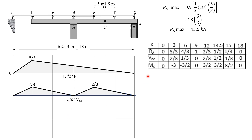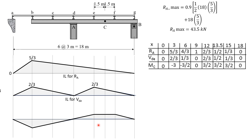For moment at C: the values are 0, negative 3, negative three-halves, 0, then three-halves, horizontal at three-halves, three-halves, then 0. That is the influence line for moment at C. That's it for this problem.